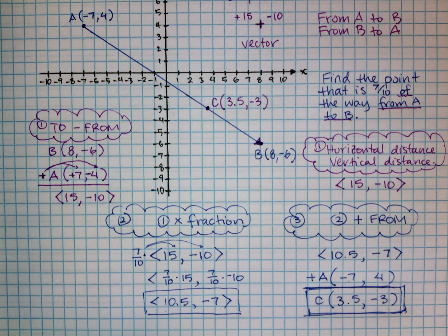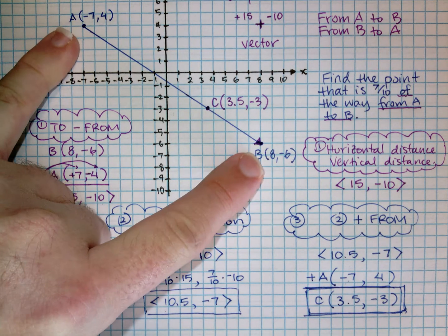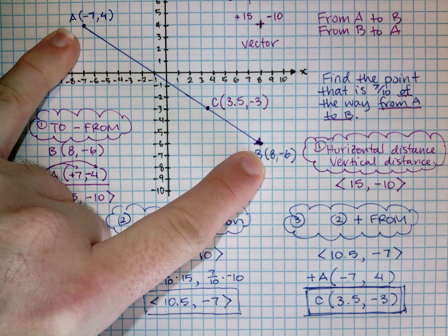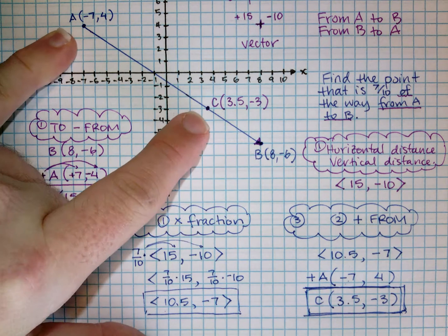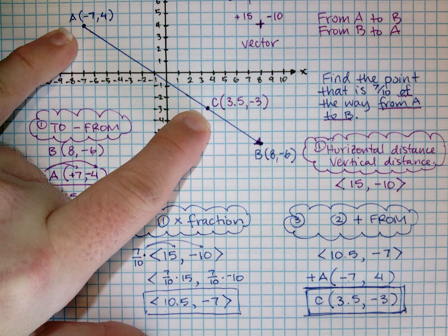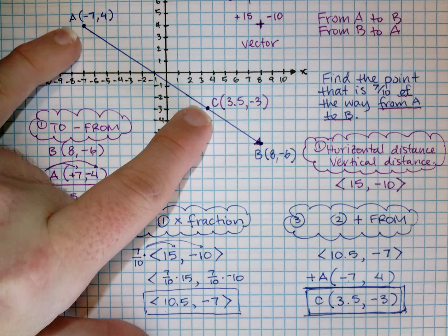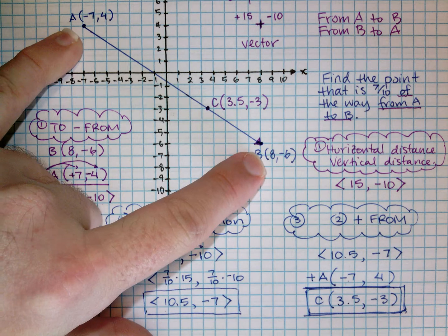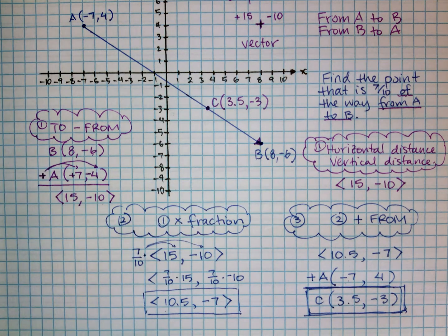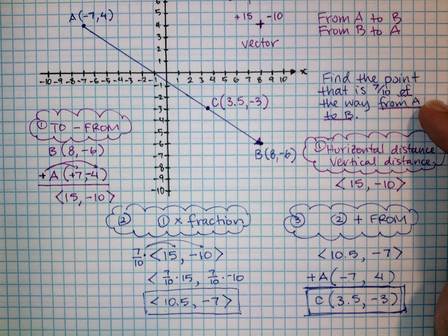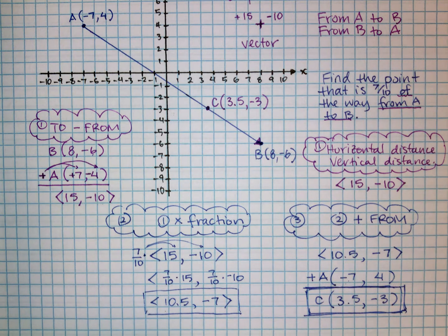There are ways to check this: we could find the distance AC using the distance formula — a special case of the Pythagorean theorem — and find the distance AB the same way, then show that AC is seven tenths of AB. I'll leave that to you to do on your own for practice. Also try switching it around and finding the point seven tenths of the way from B to A — leave your answer in the comments and I'll let you know if you got it right. Have a good day, thank you everybody!